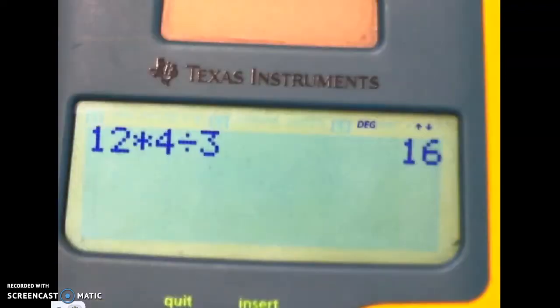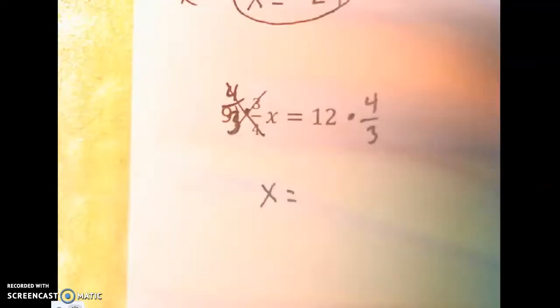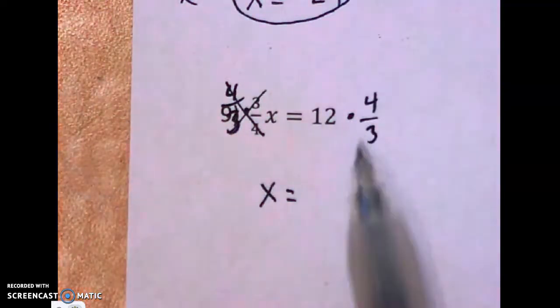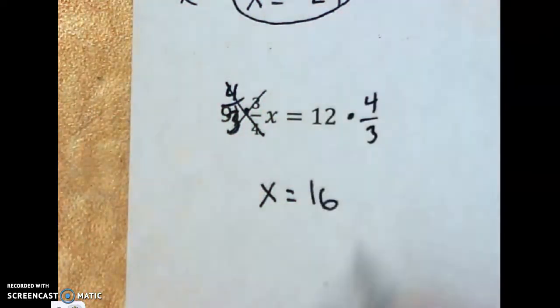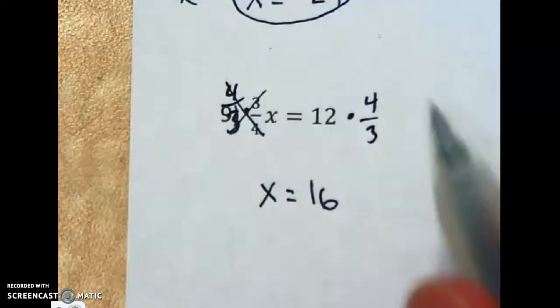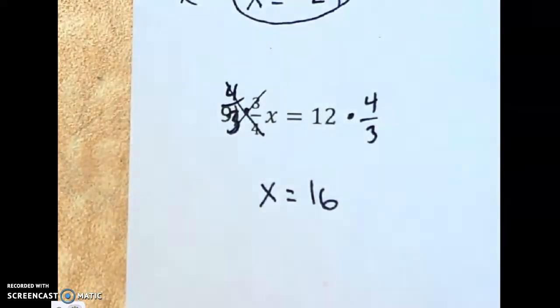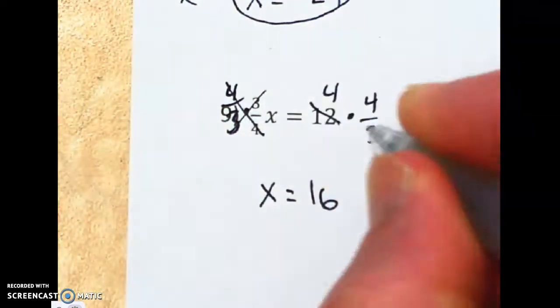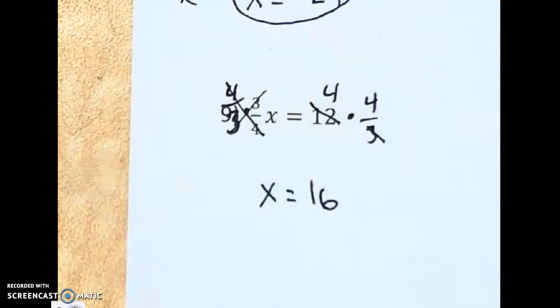That's how you do it on the calculator. Just type it in as you see it. A fraction is the same thing as division. That's how I was able to do that on the screen. Okay, by hand, I would have divided 3 into 12, and that would have been a 4. So the 12 would cancel, the 3 would cancel, and 4 times 4 is 16.